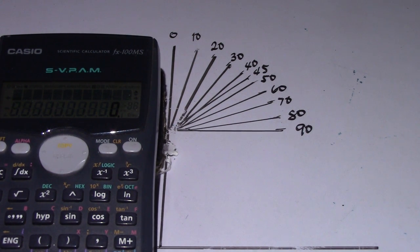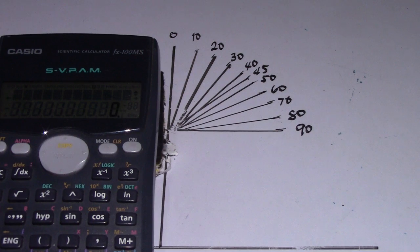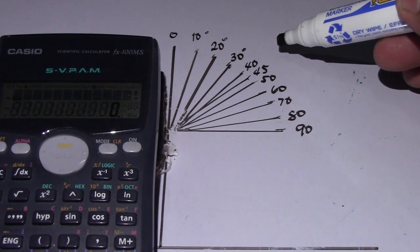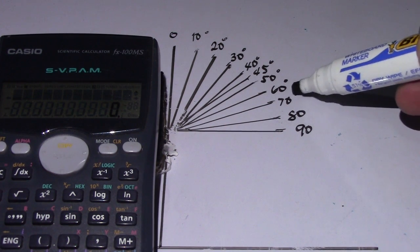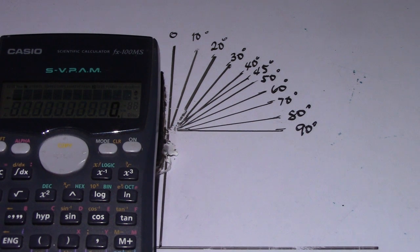Hi guys, hi to all my subscribers. So this is our new video. You can see we have a numbering from this table — different degrees: 10 degrees, 20 degrees, 30 degrees, 40, 45, 50, 60, 70, 80, and 90 degrees. These degrees each have a different constant angle. This formula for the constant angle is important in piping works.